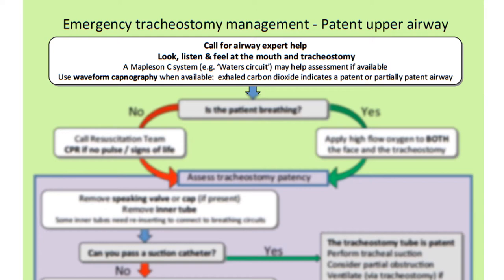There are a couple of adjuncts you can use to assist your assessment. First, the Mapleson C circuit, also known as a water circuit. You can use this in two ways: with a face mask placed over the patient's nose and mouth, or over the tracheostomy, or you can attach it directly to the tracheostomy. The reservoir bag provides visual confirmation by its movement if the patient is breathing. Also, waveform capnography can be attached as another method to give visual confirmation of breathing, as it gives a pictorial display of the carbon dioxide concentration in expired air.